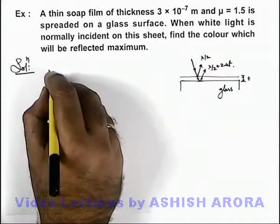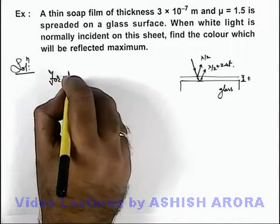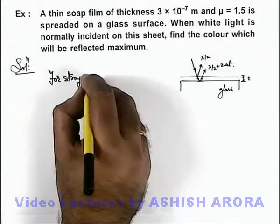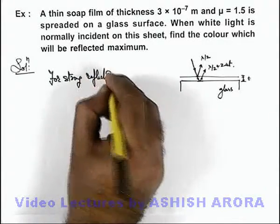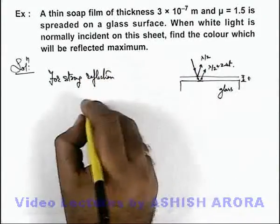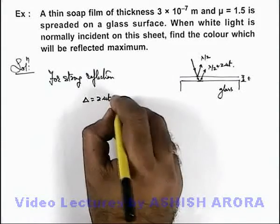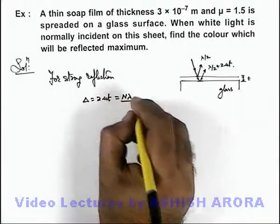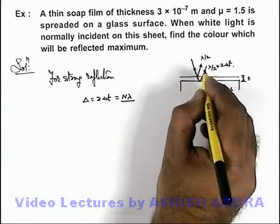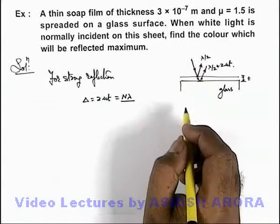Now in this situation, we can write for a strong reflection, we consider constructive interference. The path difference between the two waves is 2μt, and this 2μt must be equal to nλ if the reflected light beam is interfering constructively for the two waves.